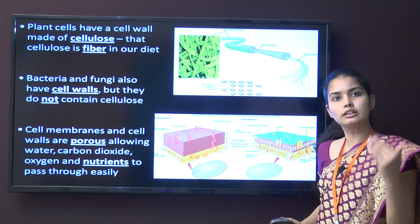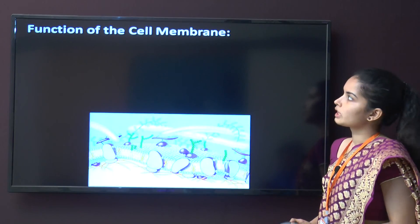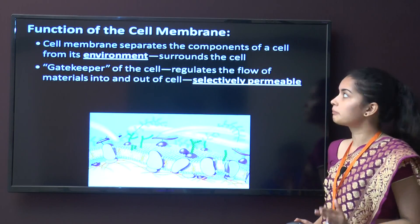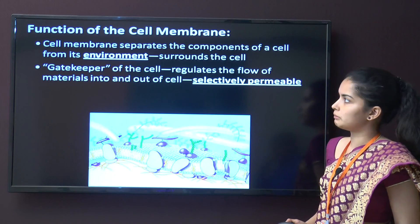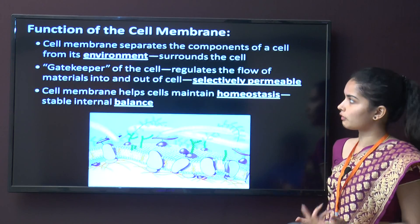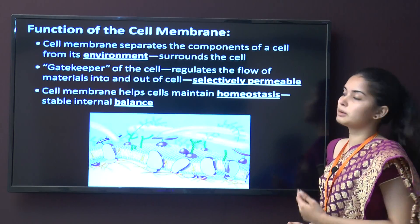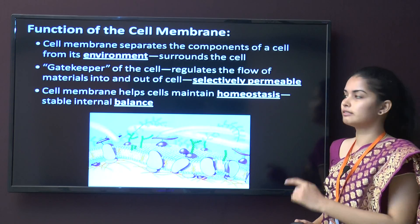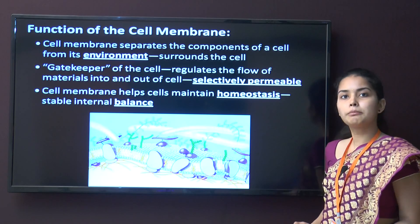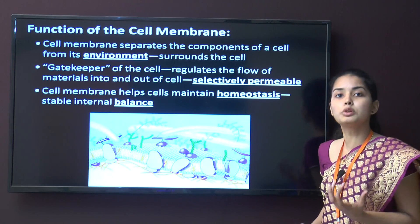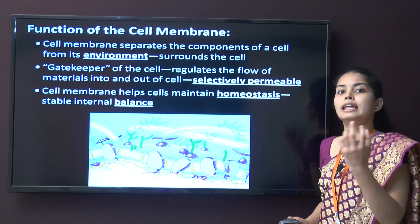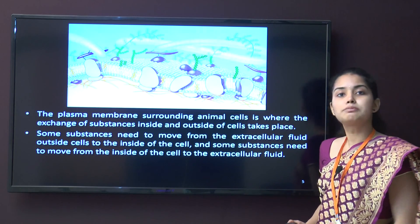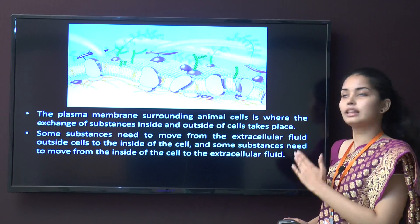The functions of the cell membrane: the cell membrane separates the components of the cell from the outer environment — it is known as the gatekeeper of the cell. It regulates the flow of materials in and out of the cell and is therefore known as selectively permeable. The cell membrane helps the cell to maintain homeostasis, which is the internal balance of the cell.